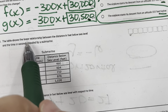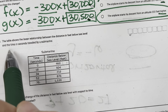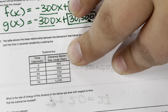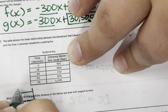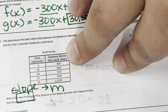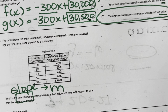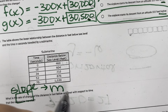Question 10: the table shows the linear relationship between distance in feet below sea level and time in seconds traveled by a submarine. What is the rate of change of distance with respect to time? Rate of change means slope — my M. I can plug this table into my calculator to figure out my slope. My M is 8.